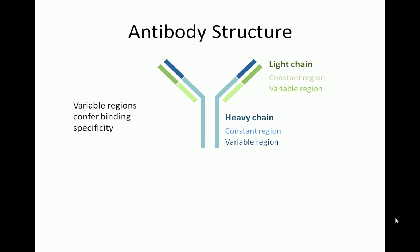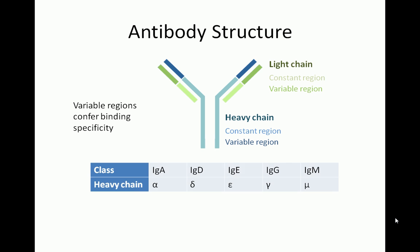There are five classes of antibodies — IgA, IgD, IgE, IgG, and IgM — and each has a unique class of heavy chain that gives it unique structural properties. The two types of light chains are kappa and lambda light chains.